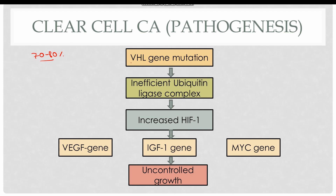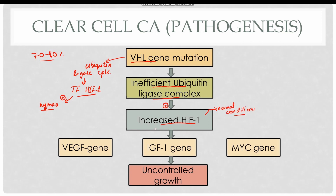The main gene involved in clear cell carcinoma is the VHL gene, which normally encodes a protein that is part of the ubiquitin ligase complex. This complex degrades certain proteins, one of which is hypoxia inducible factor 1 (HIF1). HIF1 normally protects cells and increases their survival in cases of hypoxia. When the VHL gene is mutated, there is inefficient ubiquitin ligase complex formation, resulting in increased HIF1 under normal conditions, which then activates the VEGF gene causing angiogenesis.